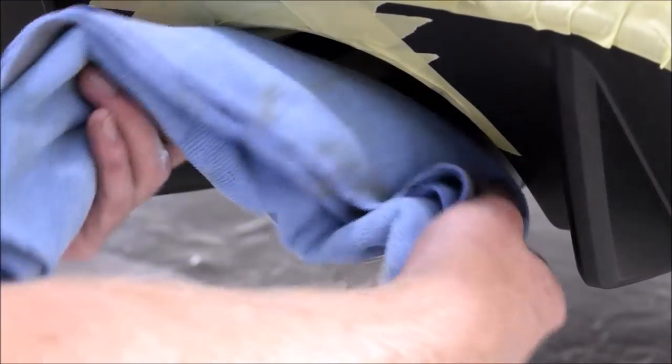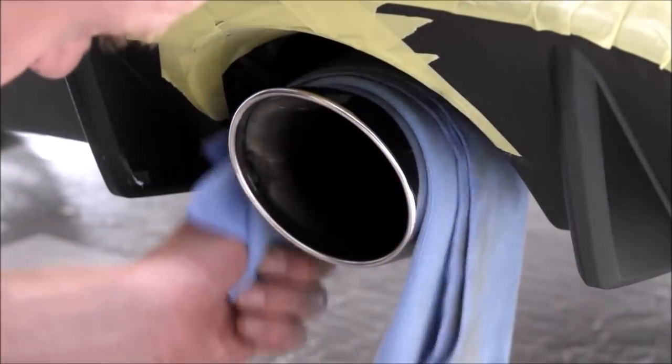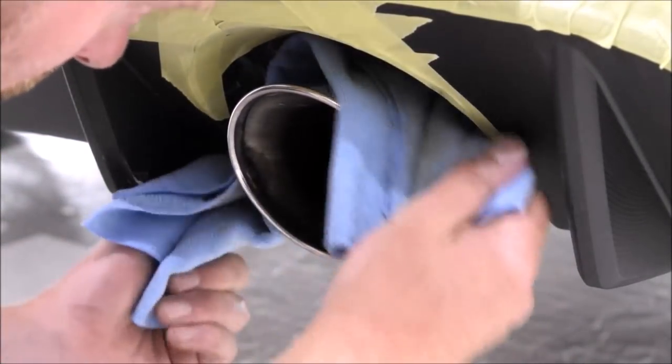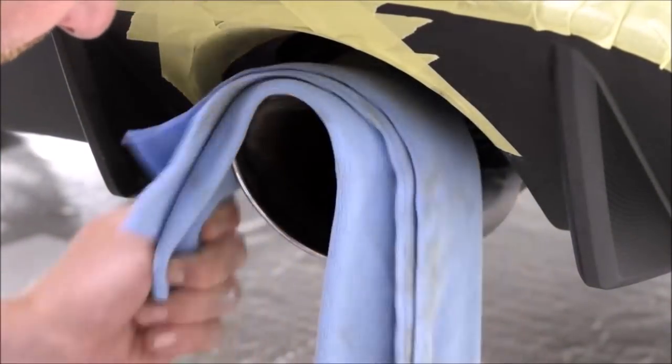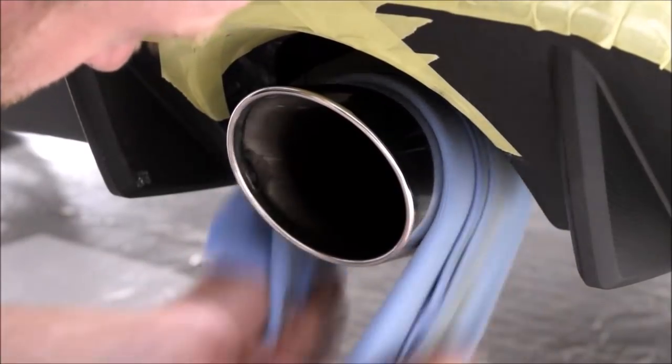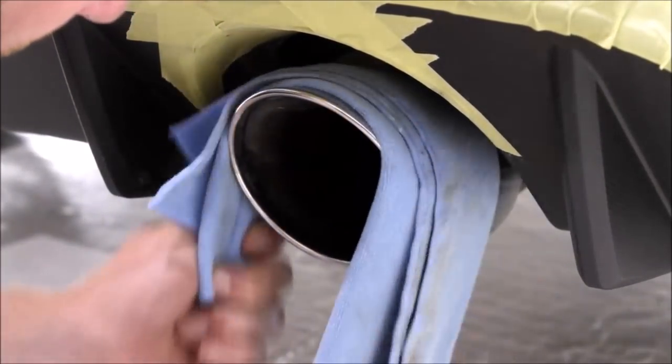Use a microfiber towel to buff the polish on the exhaust for a super shiny finish. Don't forget to wipe the exhaust down with IPA prior to applying the ceramic coating. The exhausts were polished as one of the final steps before the ceramic coating application, hence why there's still masking tape on the plastic trim.